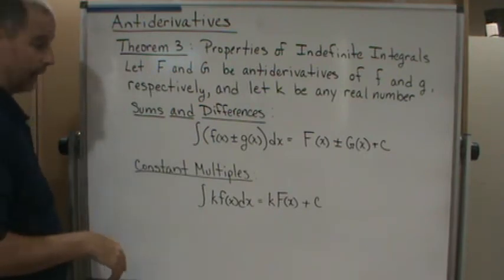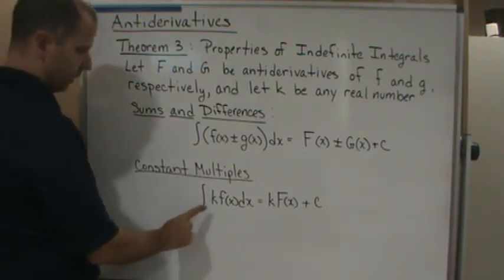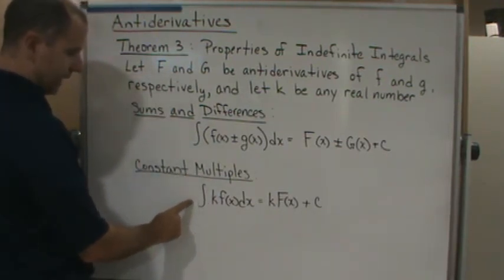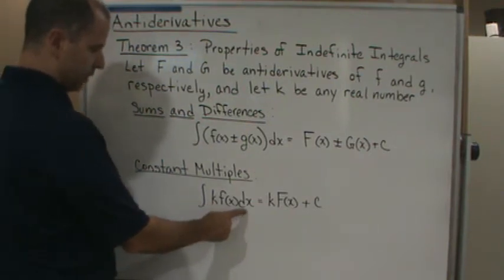And then the constant multiple property: we can pull the constant out because the constant has nothing to do with x.